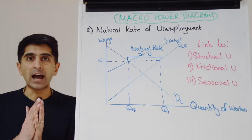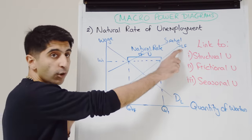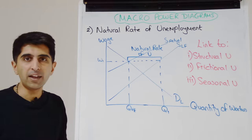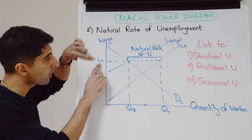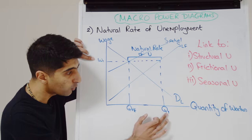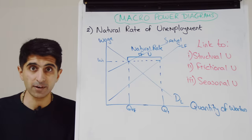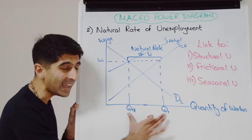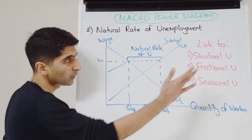The normal labour supply curve tells us the quantity of workers willing and able to work at different wage rates — think of it as the willingness-to-work curve. The actual supply curve tells us the number of workers who actually take jobs. The equilibrium from where actual supply hits demand gives you W1 and QFE — full employment. But at wage rate W1, the difference between those who are willing and those who actually take is your natural rate of unemployment. Free market economists call this voluntary unemployment. You need to link why these workers are willing but don't take jobs to structural and frictional unemployment.